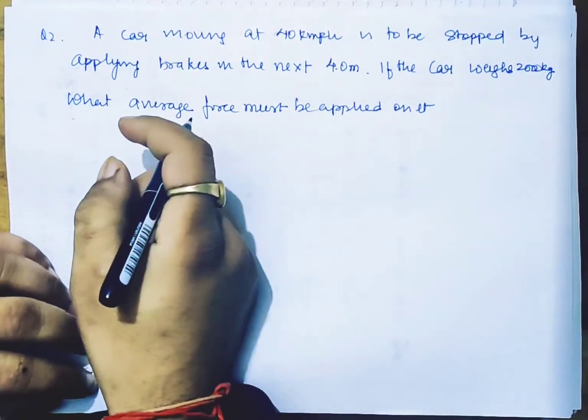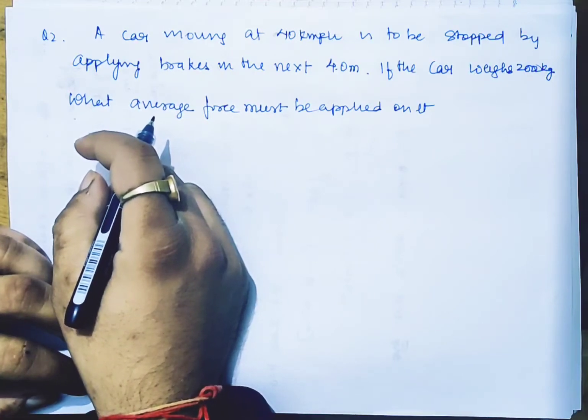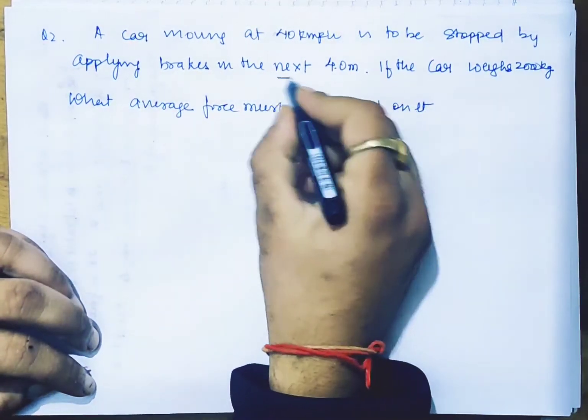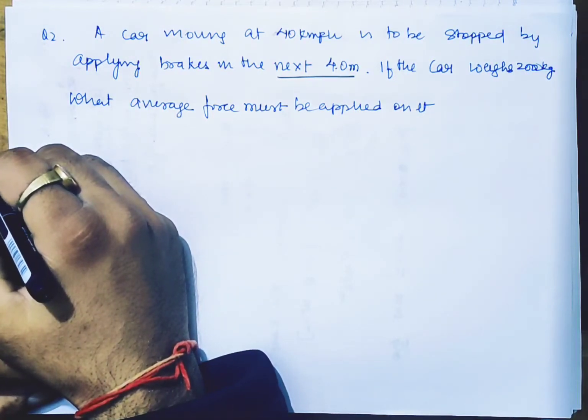A car moving at 40 km per hour is stopped by applying brakes in the next 4 meters. The car weighs 2000 kg. What average force must be applied on it?